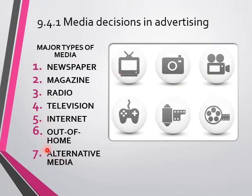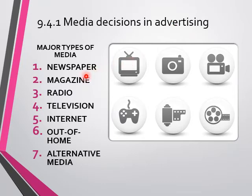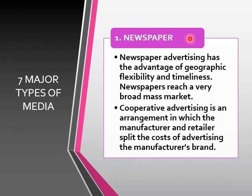There are seven major types of media - please don't confuse these with types of advertisement. The seven major types of media for advertising are: newspaper, magazine, radio, TV, internet, out-of-home, and alternative media. Newspapers, although sometimes now online or e-newspapers, have the advantages of geographic flexibility and timeliness, and can reach a very broad mass market. Geographic flexibility means you can know where these newspapers are being published and to which location.